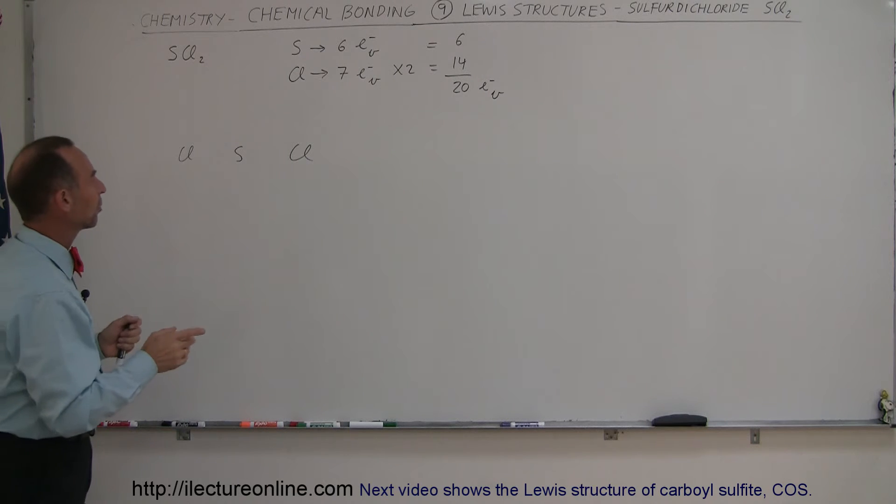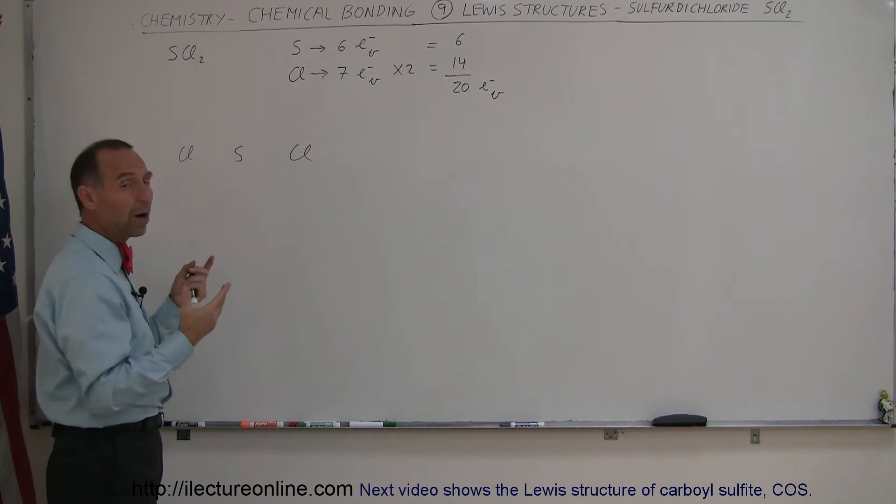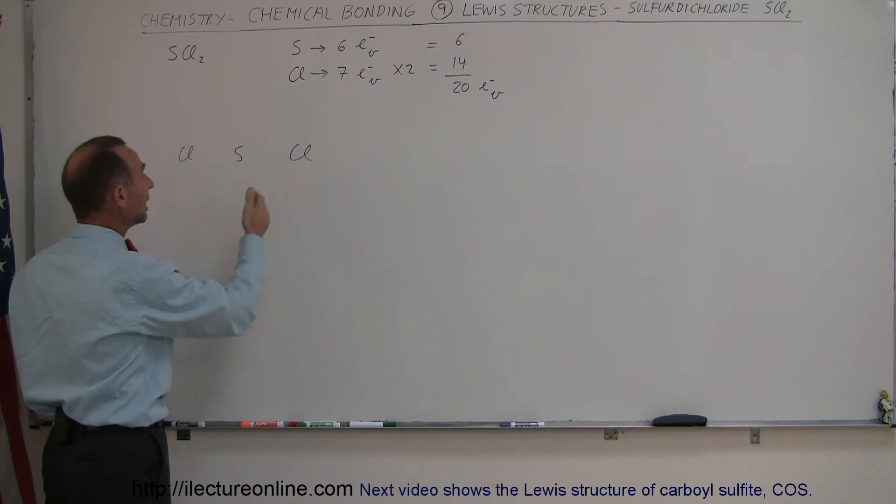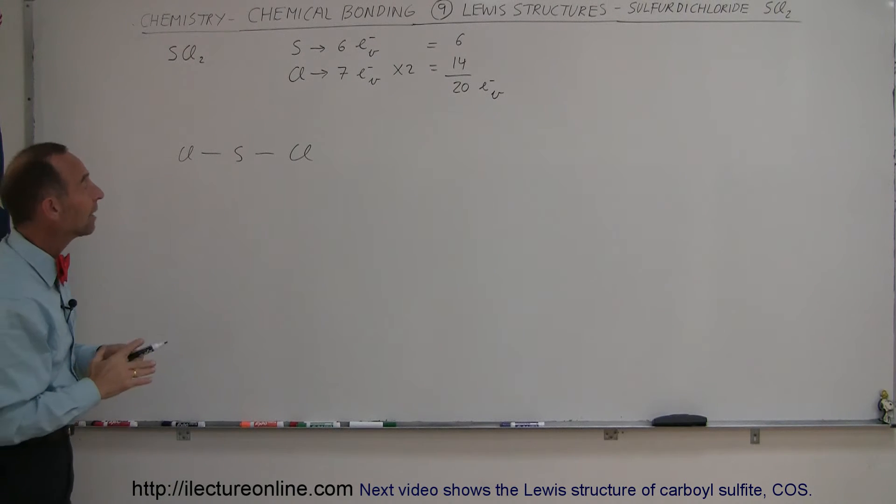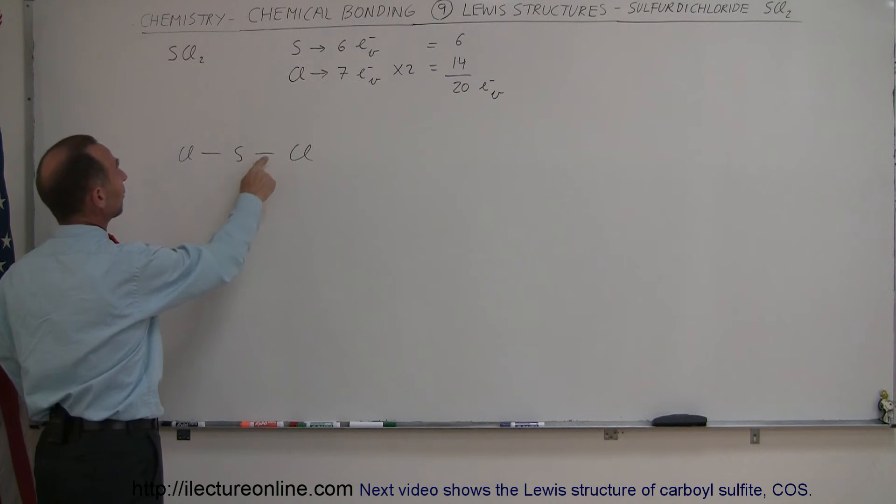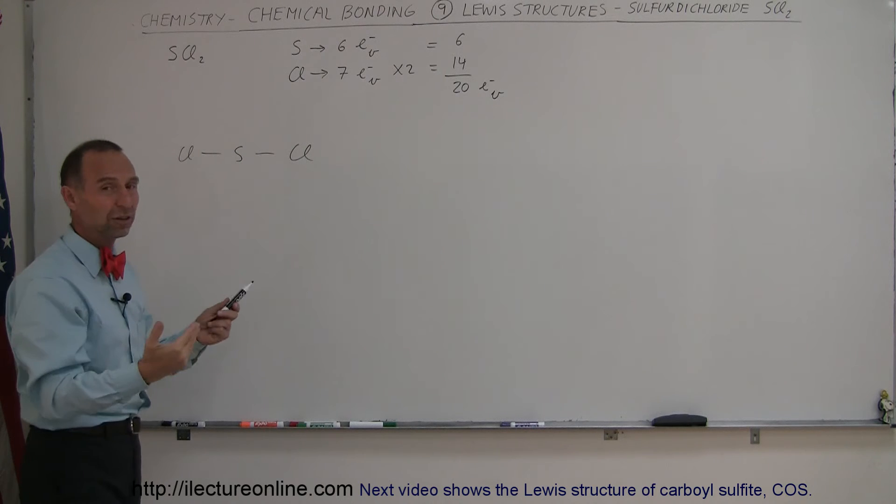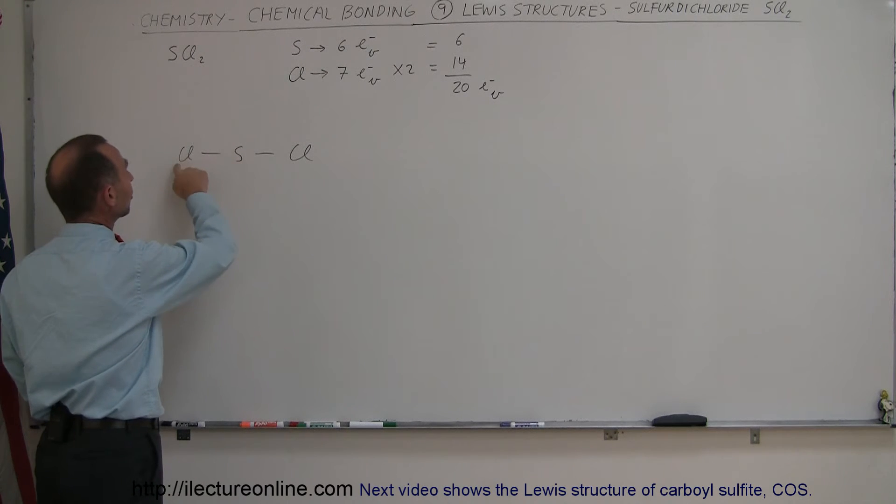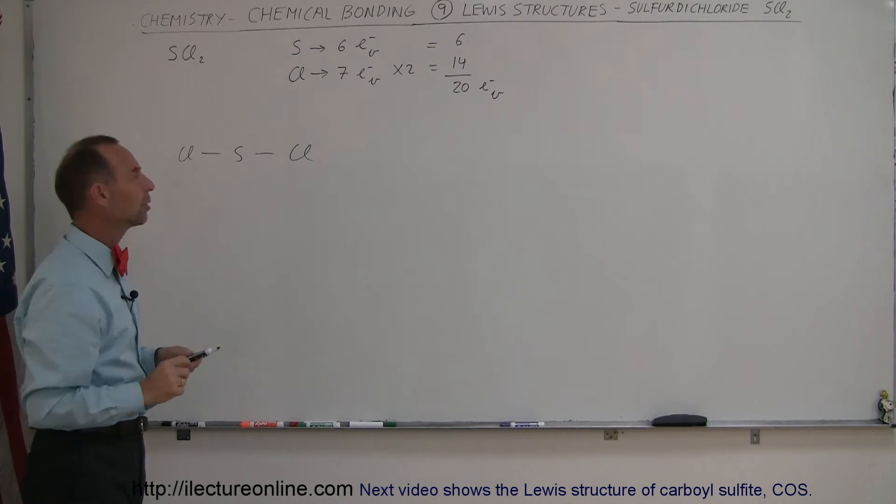Next we need to put in bonds. Remember sulfur needs two bonds, which means it can have a bond on each side with one chlorine atom, and chlorine only needs one bond. This takes care of the need of having eight valence electrons. This will give sulfur two additional ones by sharing it with chlorine, and give each of the chlorines one additional one.